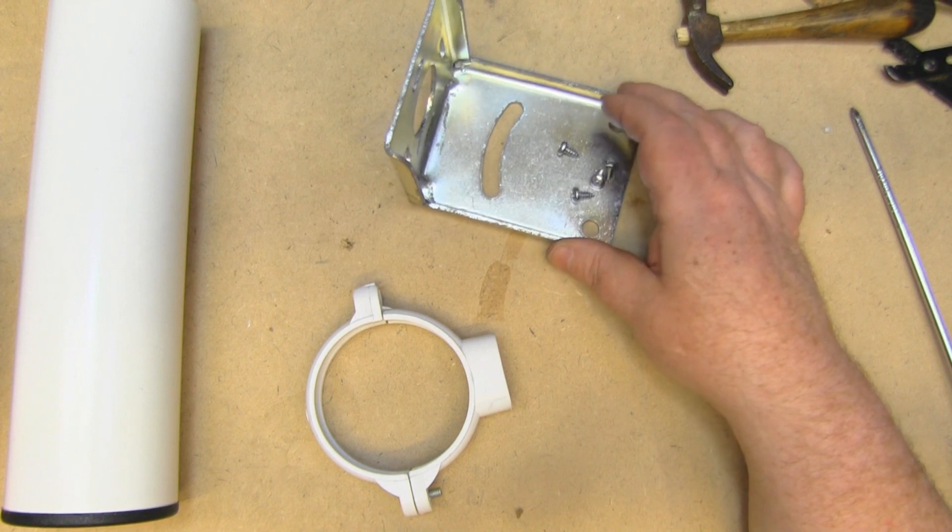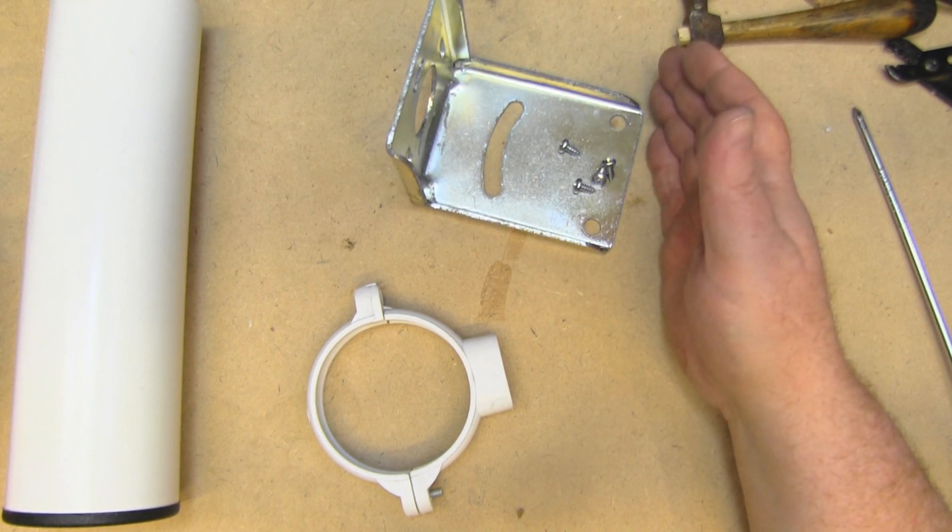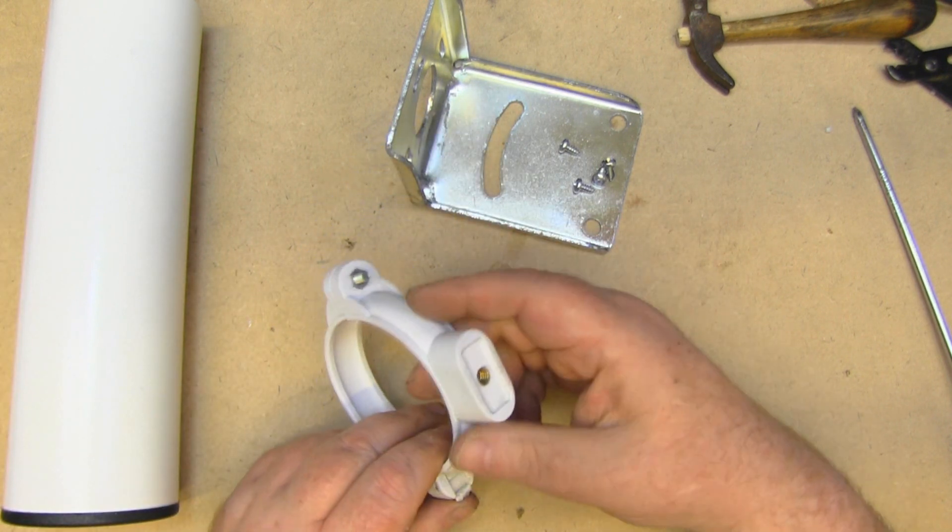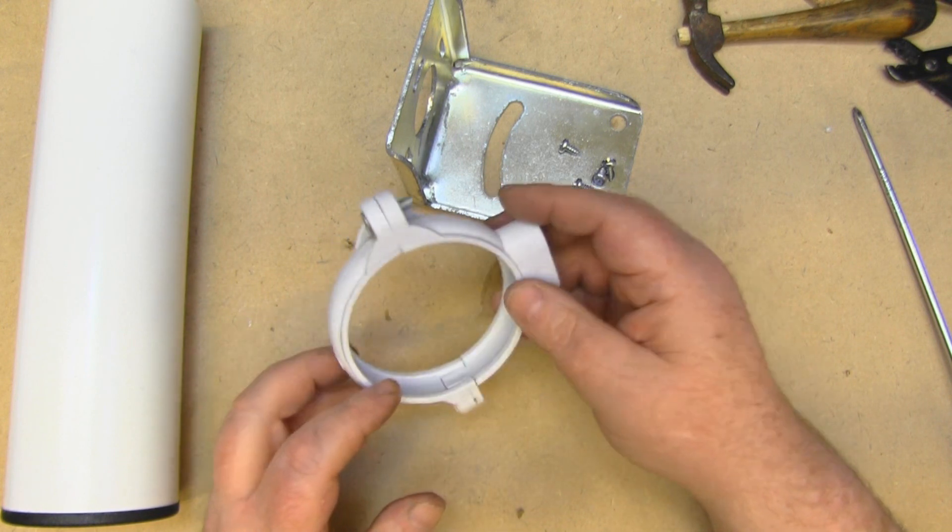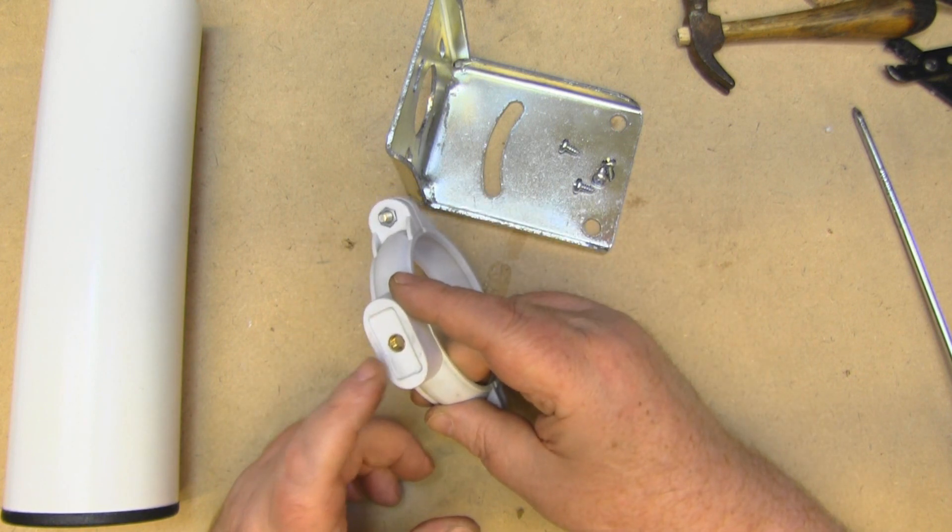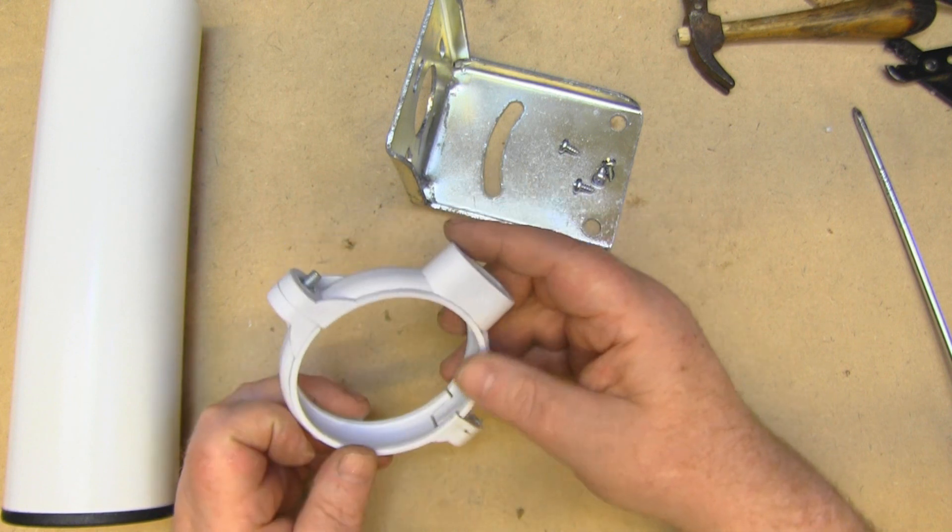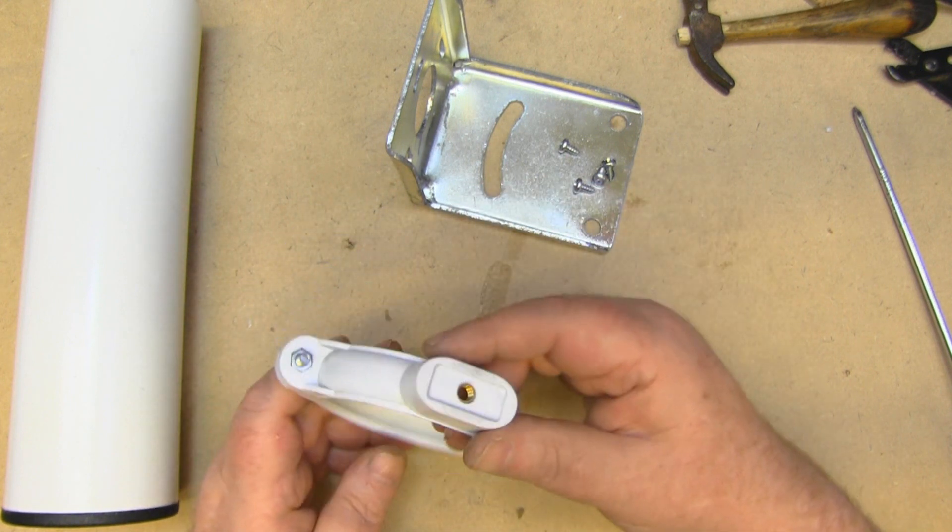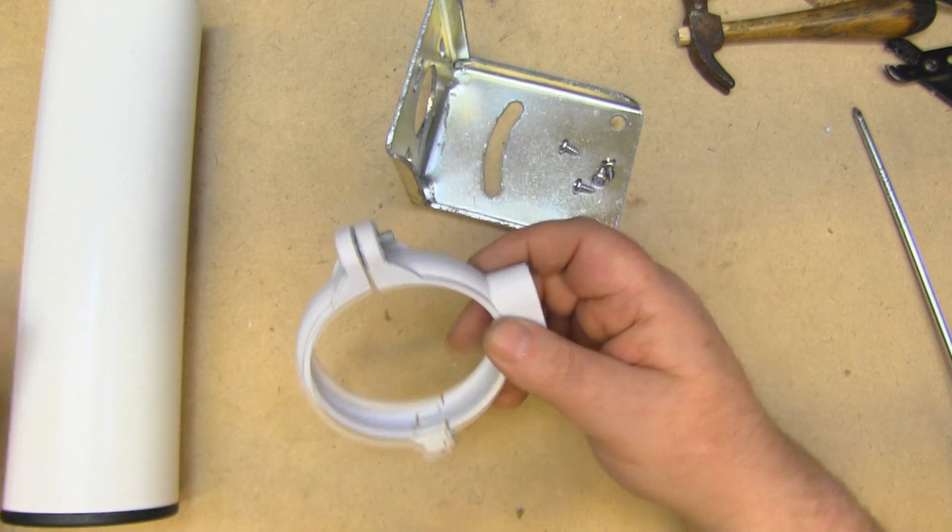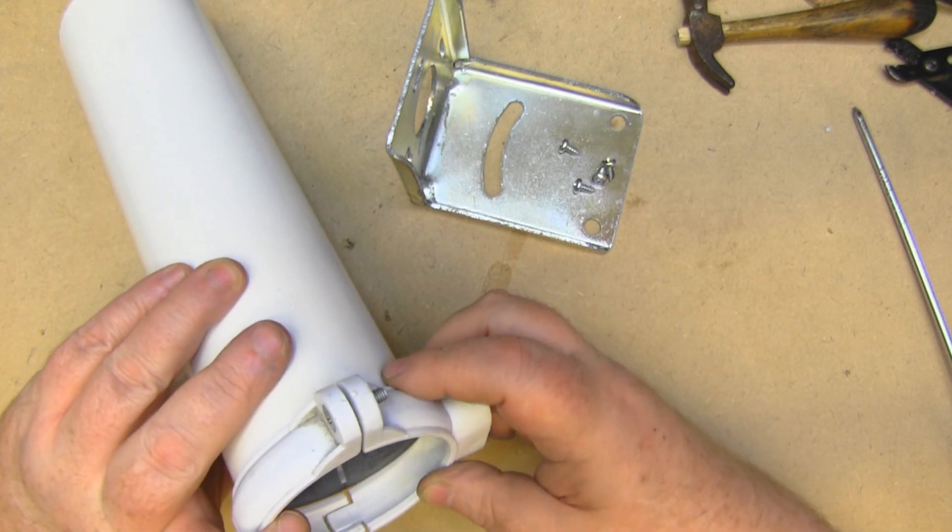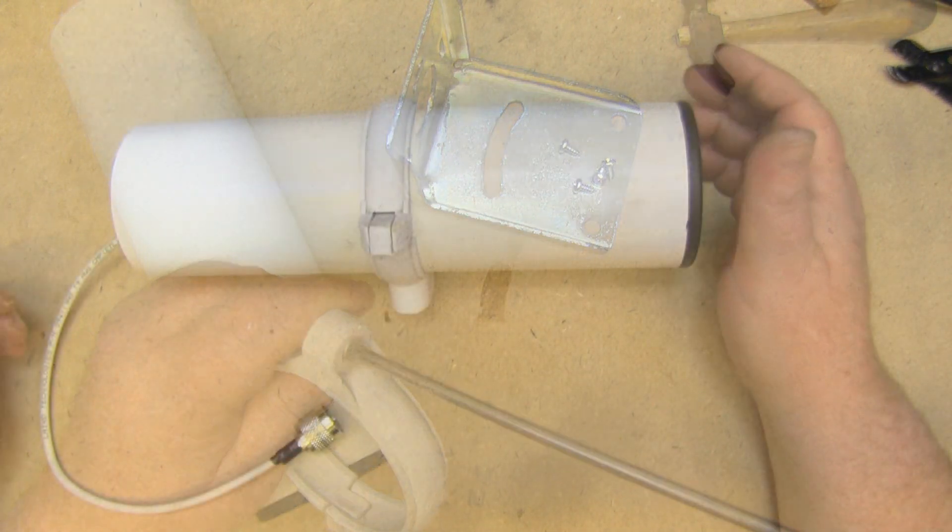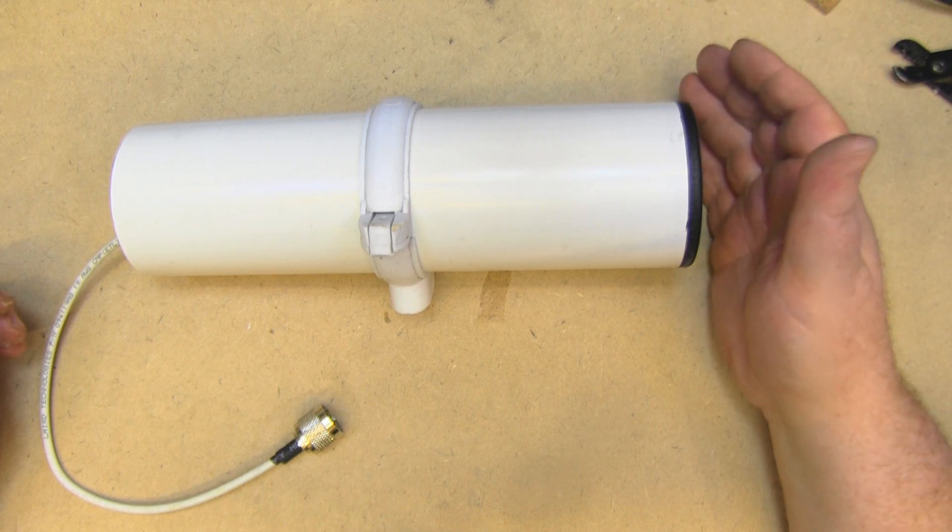Now as I said, we can use the original bracket if we wanted to mount this permanently on the outside. But if you wanted it more portable, I've got this ring here that I picked up off eBay. It's basically just got a mounting point there for a tripod. This is really handy - pop this over the top and we can attach a tripod to it. Now the final thing - did we improve the VSWR on this antenna?